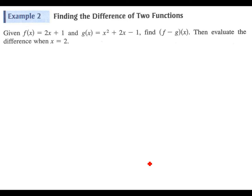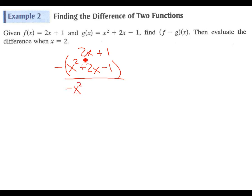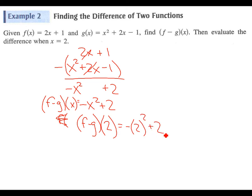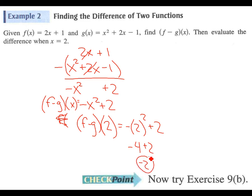Same thing here except we're going to be subtracting: f of x minus g of x. We've got 2x plus 1 minus x squared plus 2x minus 1. I'm going to put this in parentheses so we don't lose our signs. So we've got negative x squared, the 2x minus 2x cancels, and when we minus a negative we're going to add it. So we'll have negative x squared plus 2. If we do f minus g of 2, we'll have negative 2 squared plus 2, which gives us negative 4 plus 2, or negative 2. Try part b of exercise 9.